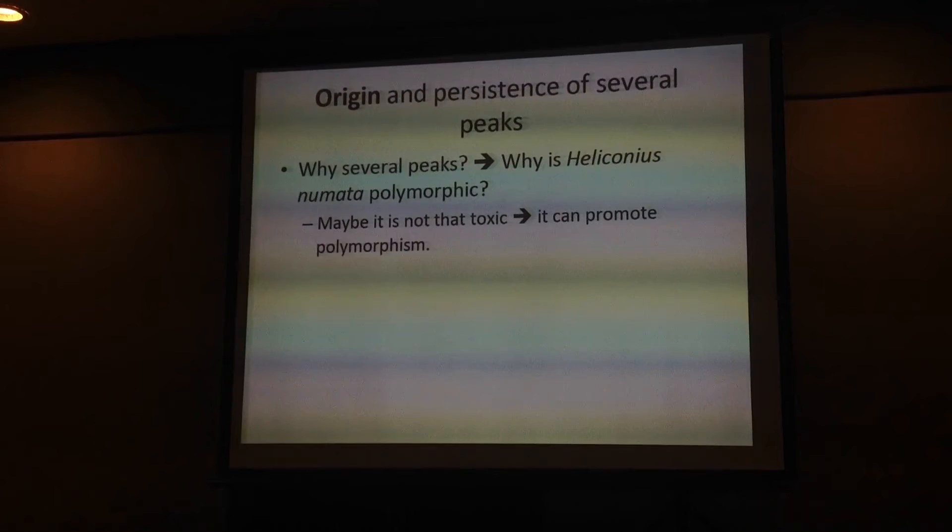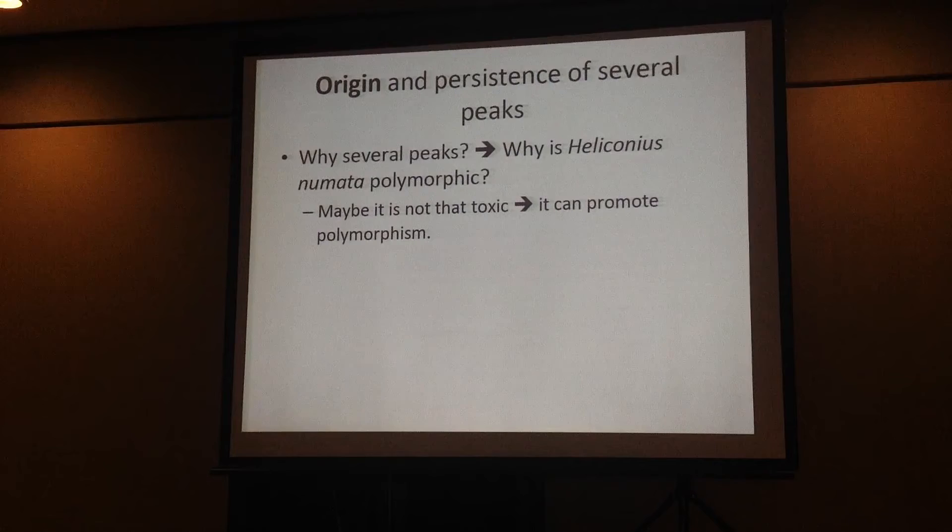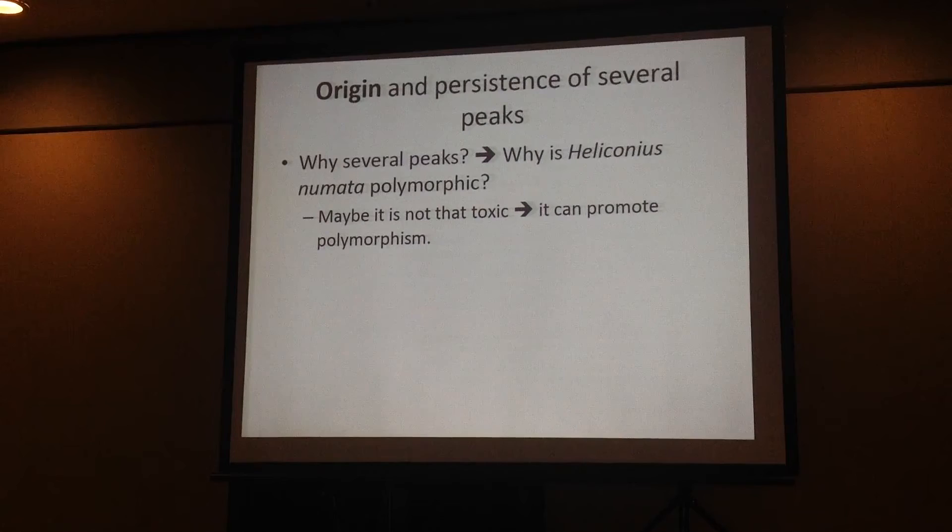In the first part of the talk, I will talk about the origin of those different peaks — so why are there different peaks and not only one? Some authors have proposed that maybe Heliconius numata is not as toxic as the other co-mimics, and then this can promote polymorphism.